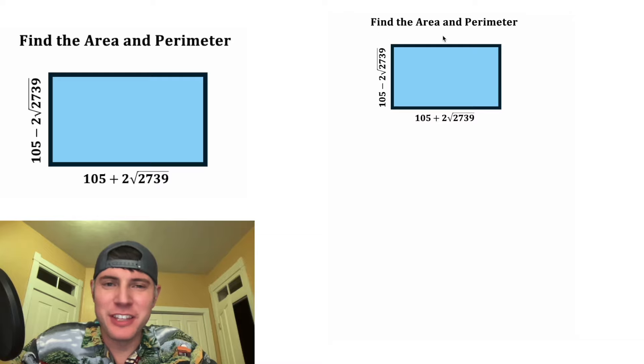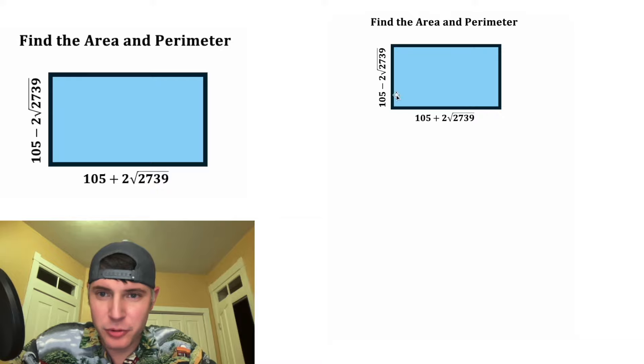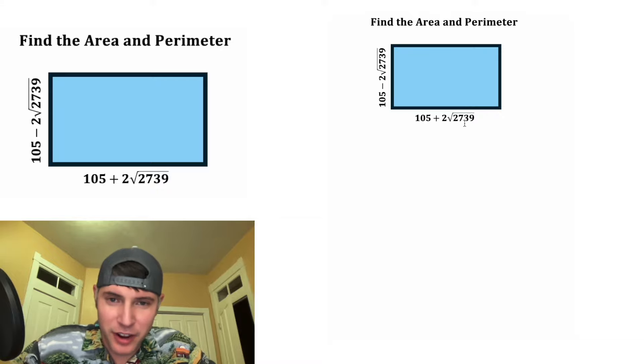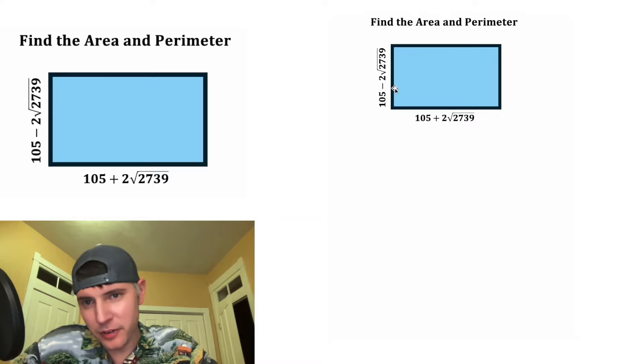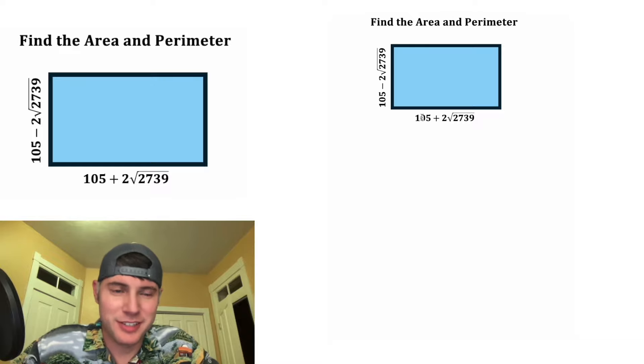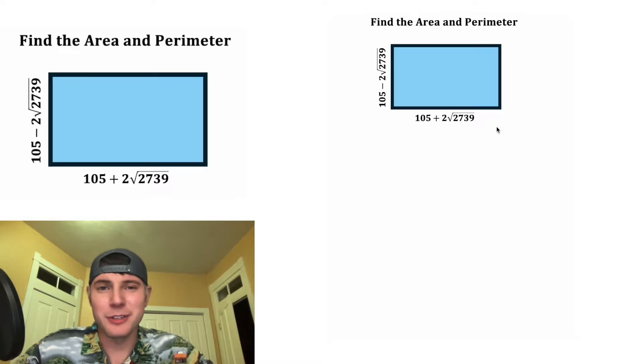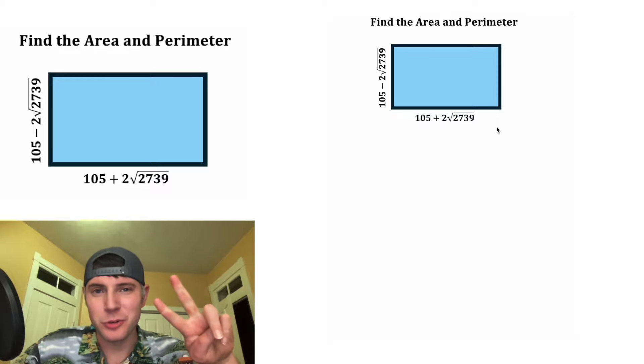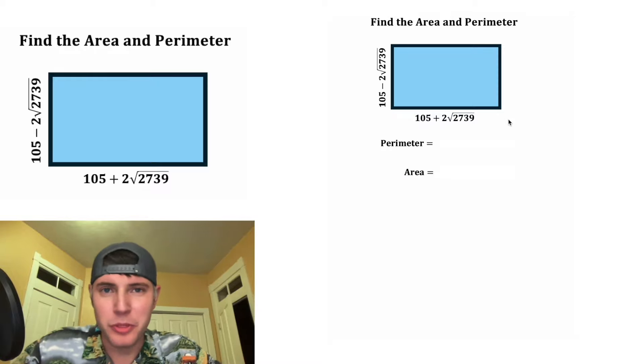Hey guys, this looks like a fun one. It says find the area and perimeter of this rectangle. The base and the height are these crazy looking numbers: 105 plus 2√2739 and 105 minus 2√2739. How do we find the area and perimeter if you want to try it on your own? Pause it right now because I'm going to solve it in three, two, one.